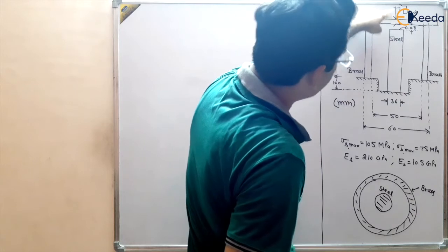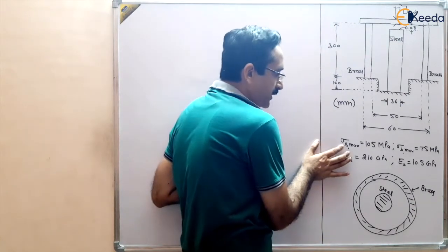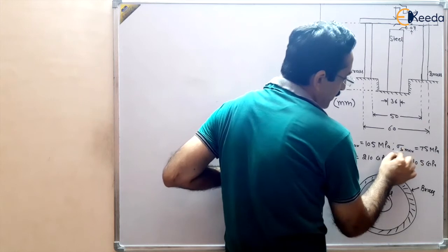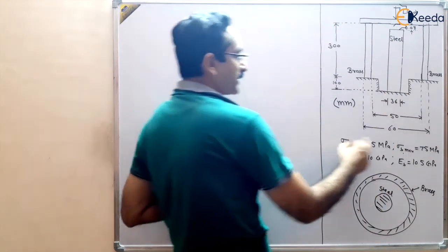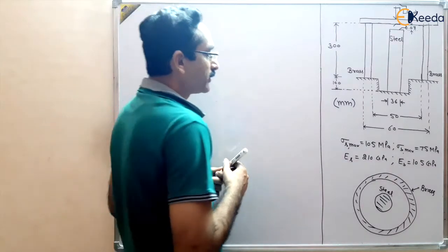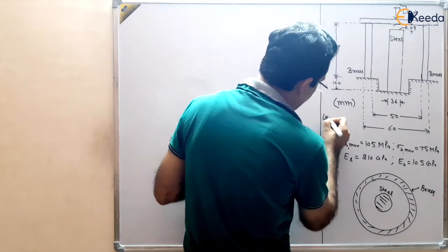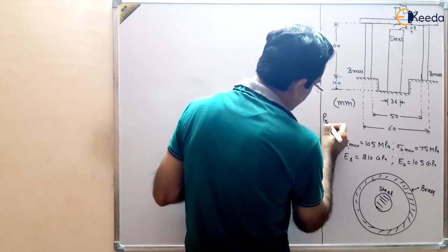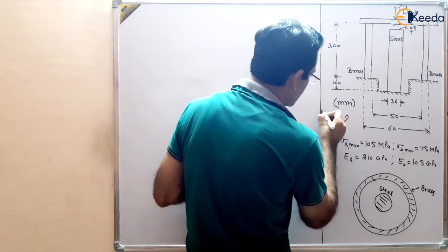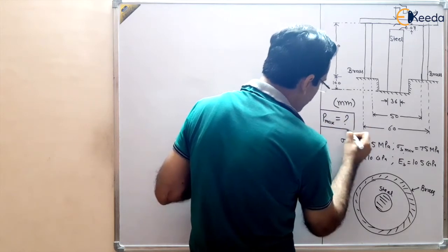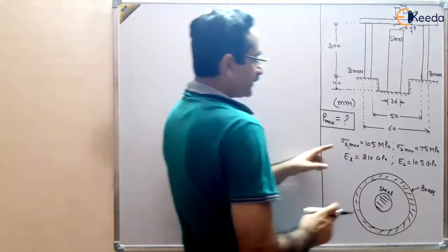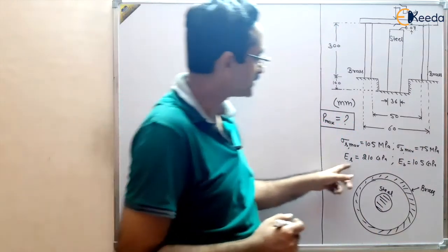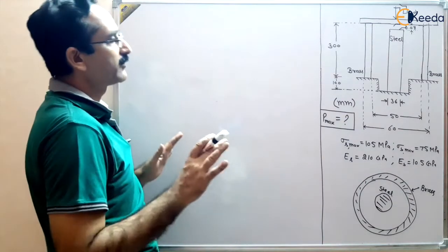The maximum load we can apply is limited such that the maximum stress in steel does not exceed 105 MPa and the maximum stress in brass does not exceed 75 MPa. These are the maximum stresses that can be developed in the materials, and we have to find P_max — the maximum load we can apply. The modulus of elasticity is given for both steel and brass.